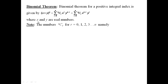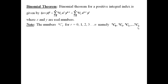Let us note a point about binomial coefficients. The numbers nCr, where r takes the values 0, 1, 2, 3, etc. up to n, whose coefficients are of the form nC0, nC1, nC2, etc. up to nCn in the above result, are called binomial coefficients.